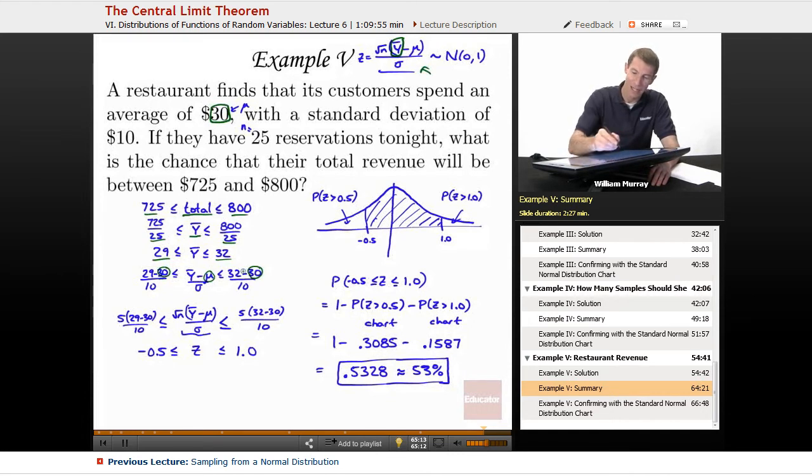And then I started to build up this formula for a standard normal variable. So I subtracted mu from both sides. That mu, where did it go? Oh, that was the average that all the customers in the world spend at this restaurant. So I subtracted 30 from both sides. And then I divided by sigma. Where's my sigma? Oh, there's my sigma right there, the standard deviation. So I divided by sigma.